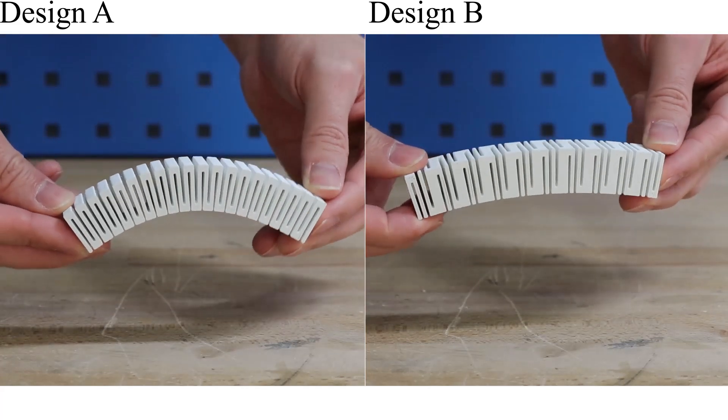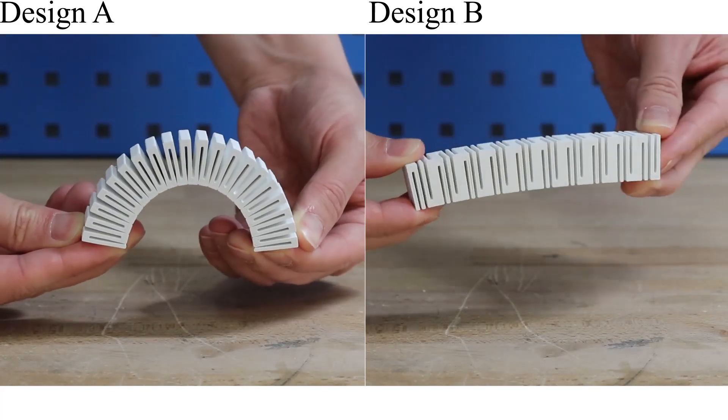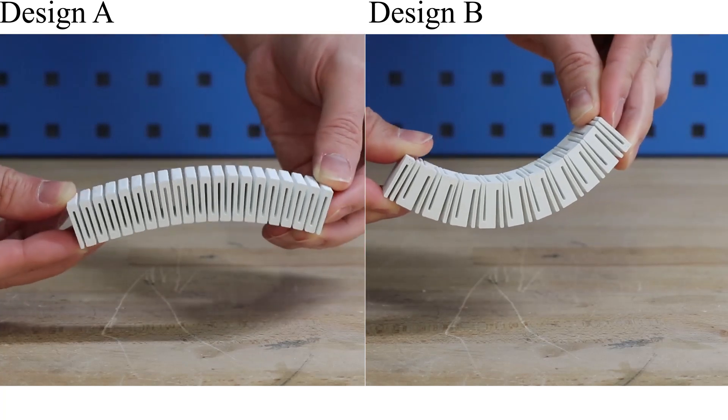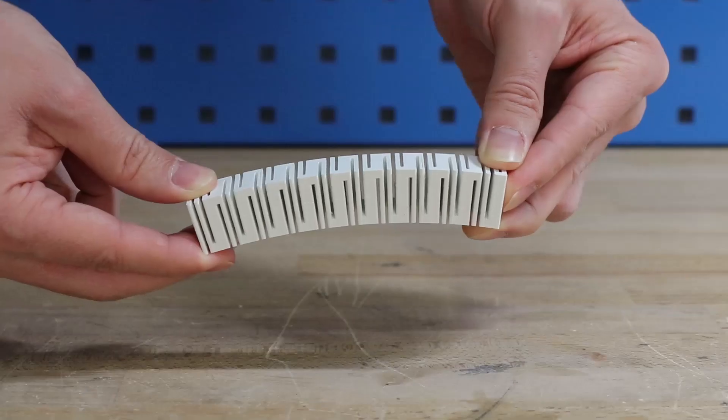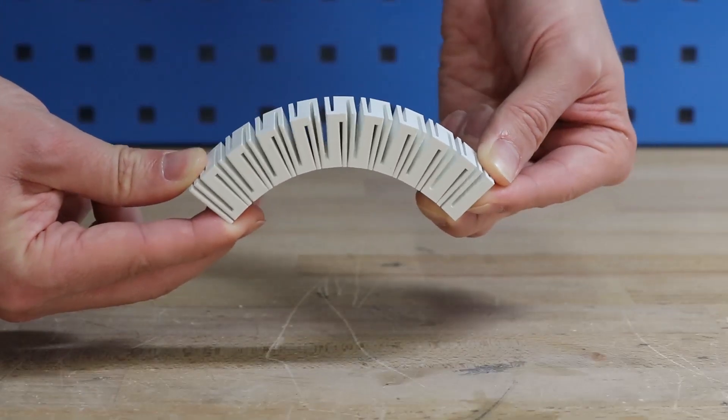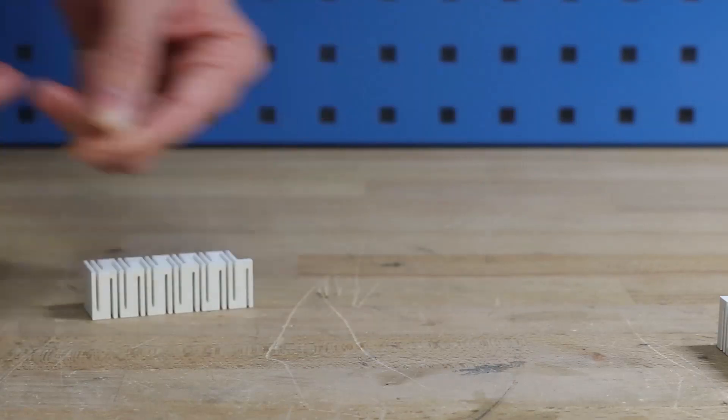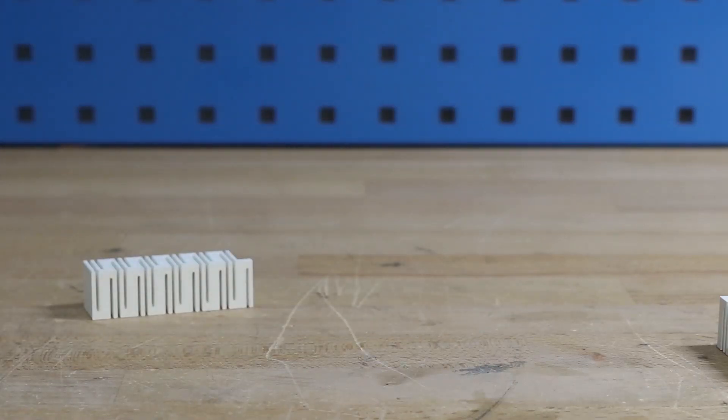Besides their different bending behavior, design B also leads to significantly higher stresses for larger bending deformations. For our 3D printed prototypes, these stress concentrations led design B to break during manipulation, whereas design A remained intact.